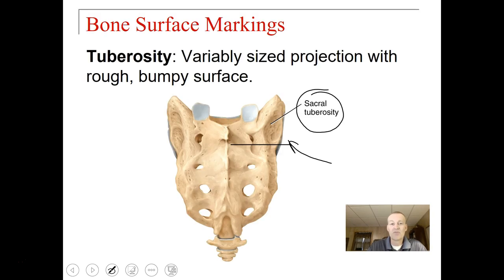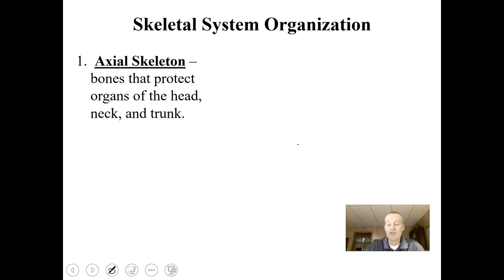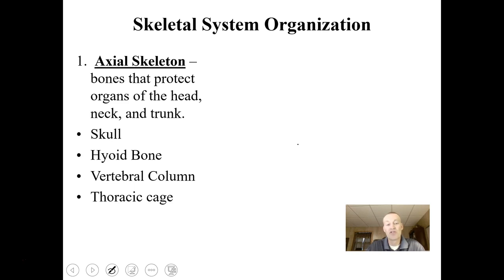Those are some of the bone parts we'll be going over. For each bone, you'll need to learn the bone name and some of its parts. As indicated in the last lecture, we have an axial skeleton — bones that protect the organs of the head, neck, and trunk — including the skull, the hyoid bone underneath your mandible where tongue muscles attach, the vertebral column, and the thoracic cage. These make up the midline of the body.